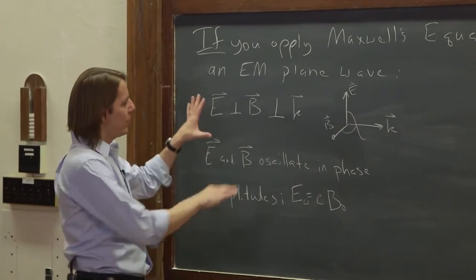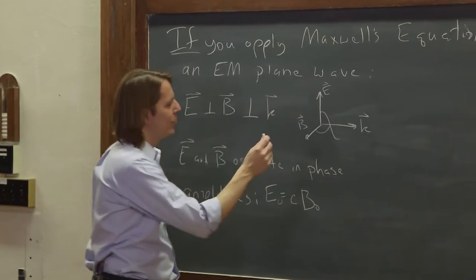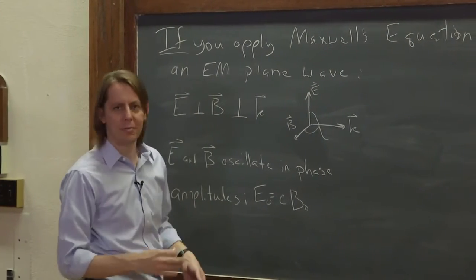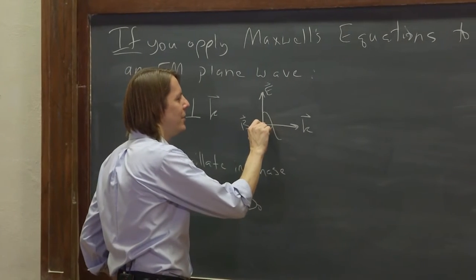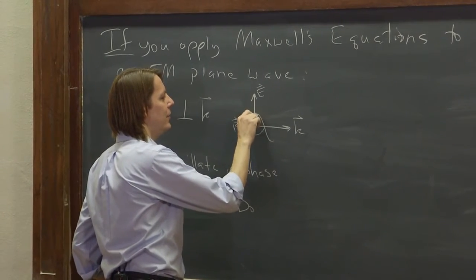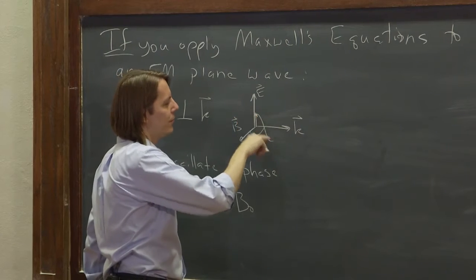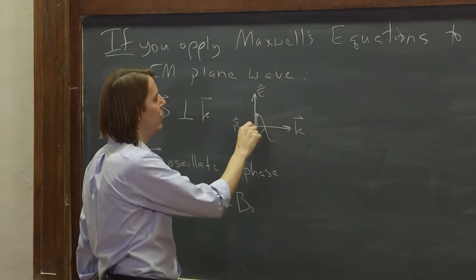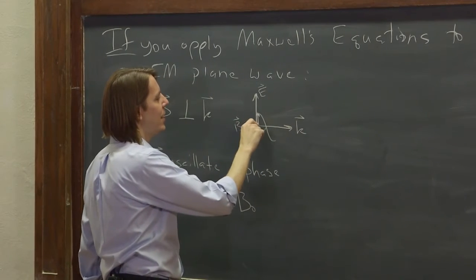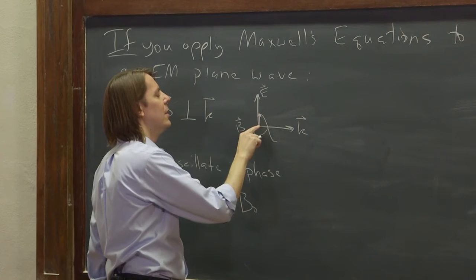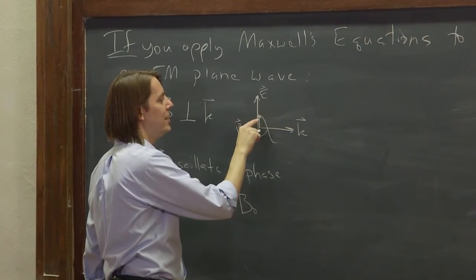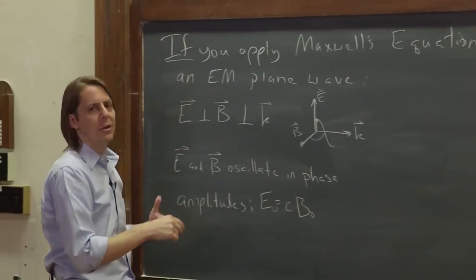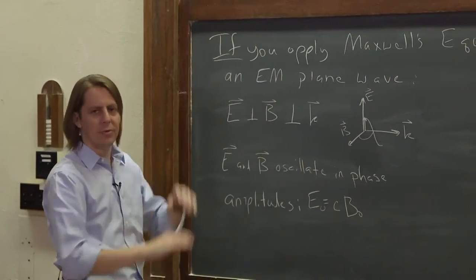One reason this is interesting is that you don't have to know everything about a plane wave to know everything. If you just know that the electric field is oscillating at a certain frequency, has a certain amplitude, and is in a certain direction, then you know a lot of other things. If you know the direction of E and the direction of K, then you know the direction of B. And if you know the magnitude of the E field — the amplitude — then you know the amplitude of the B field. So they are very interrelated; you don't just have arbitrary E fields and B fields flying around.